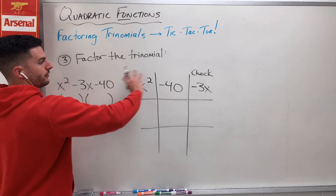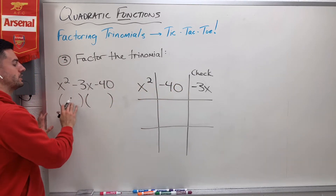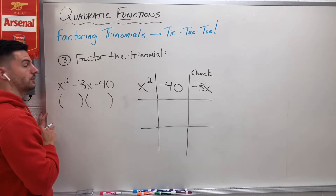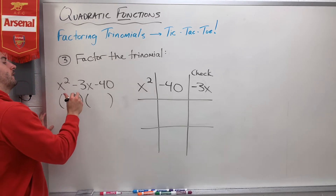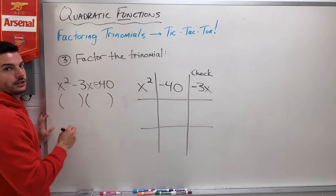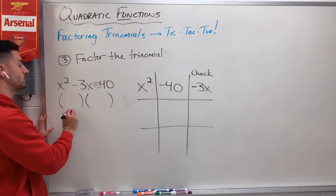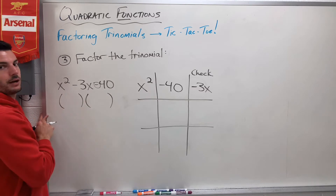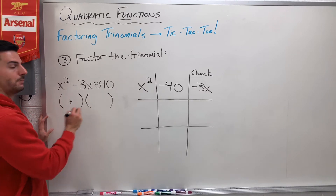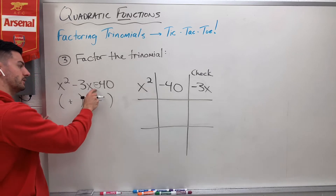After I fill in the top, I want to look at the signs, because that's going to clue me into what these two signs in my groups are going to be. I look at this C sign right here and because it's a minus, that tells me that my two signs in my binomial groups are going to be different — one's going to be a plus, one's going to be a minus.